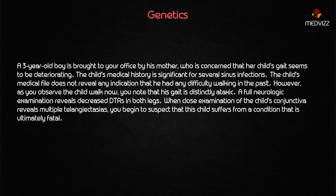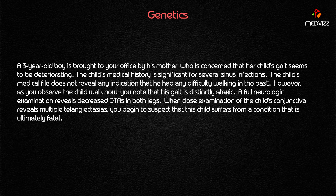A three-year-old boy is brought to your office by his mother who is concerned that her child's gait seems to be deteriorating. The child's medical history is significant for several sinus infections, with no prior difficulty walking. As you observe the child walk in your clinic, you note his gait is distinctly ataxic. A full neurological examination reveals decreased DTRs in both legs, and close examination of the conjunctiva reveals multiple telangiectasias. You begin to suspect this child suffers from a condition that is ultimately fatal — ataxia telangiectasia.